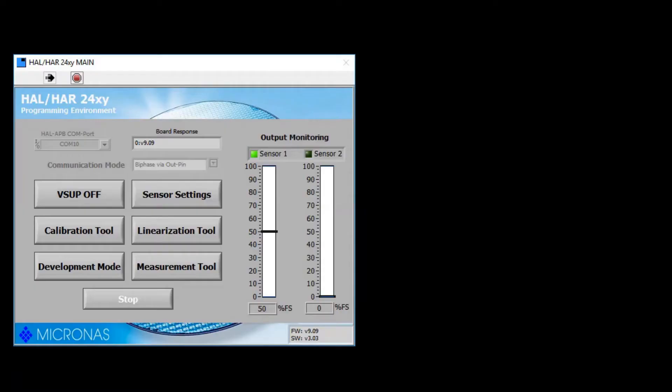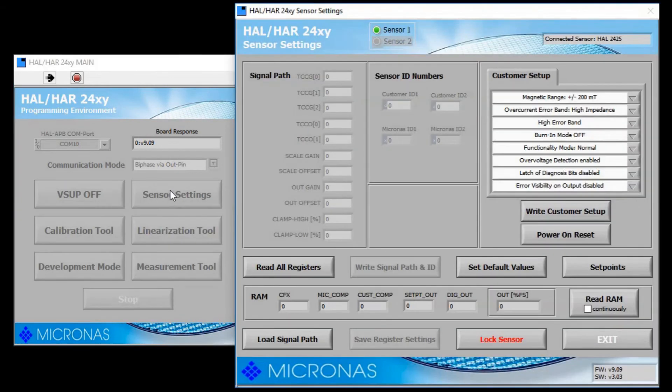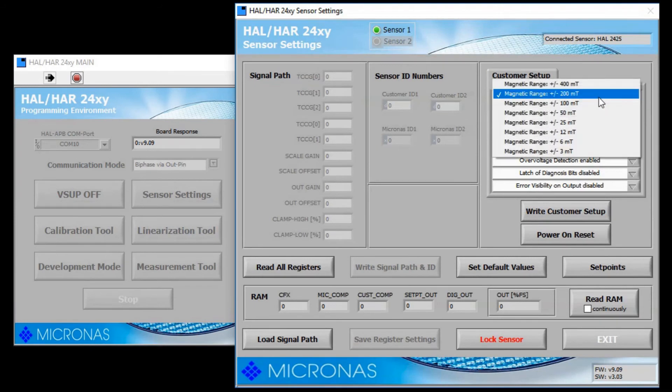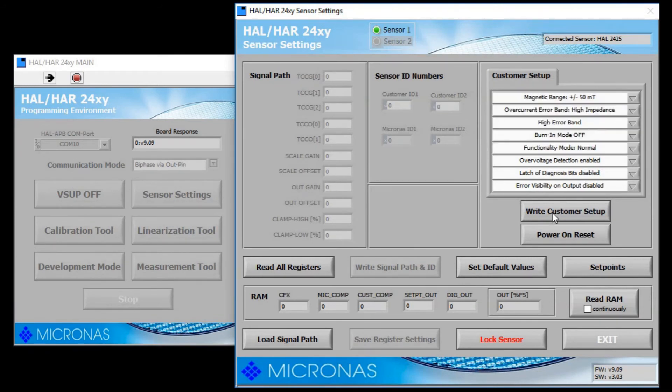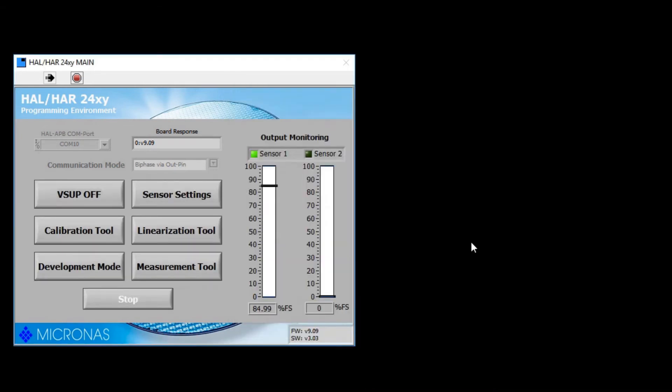There's some nice calibration tools, linearization, and then sensor settings, which we're going to open. Okay, with Hall sensor settings open, we're going to change the magnetic range from 200 millitesla to 50 millitesla and save those settings to the EEPROM.